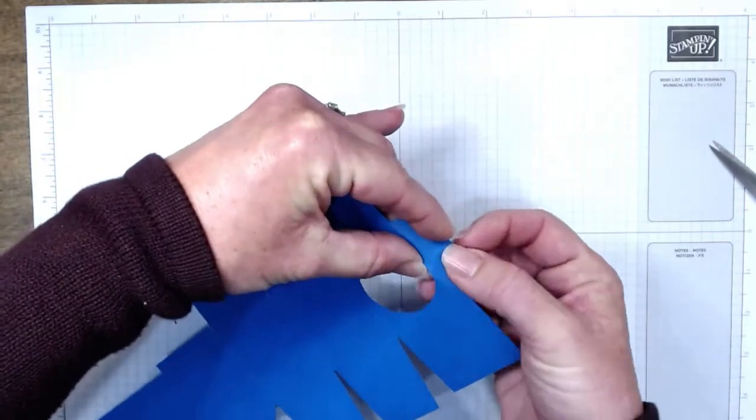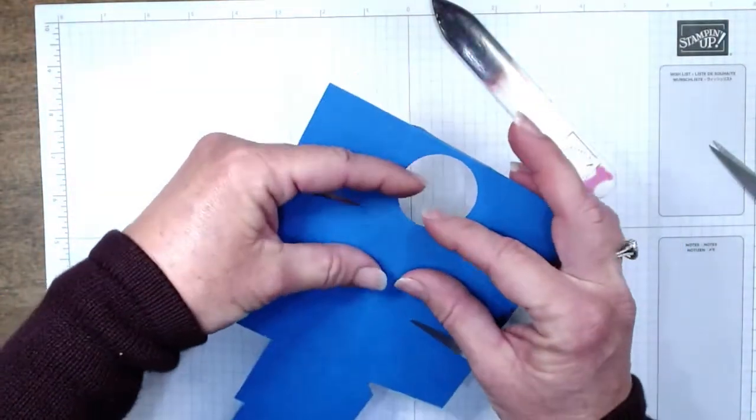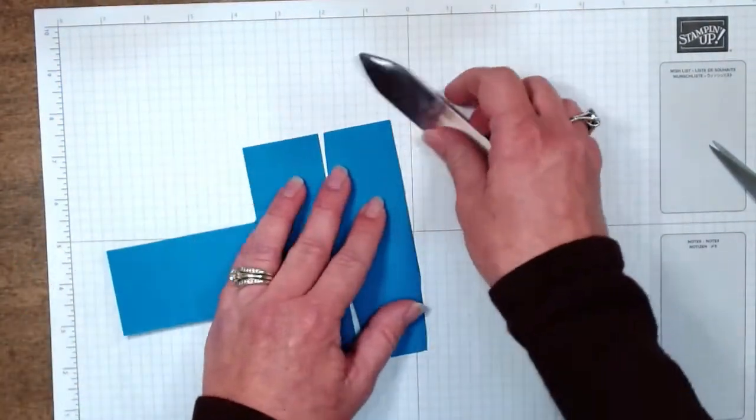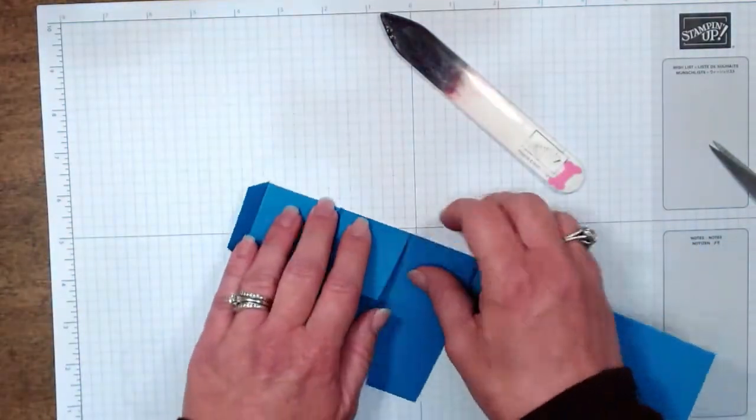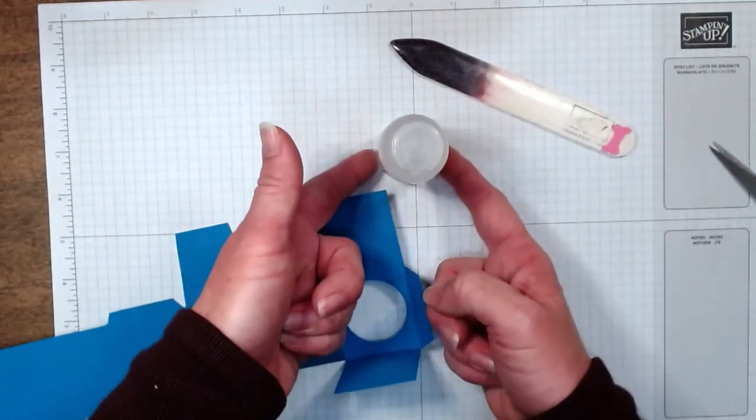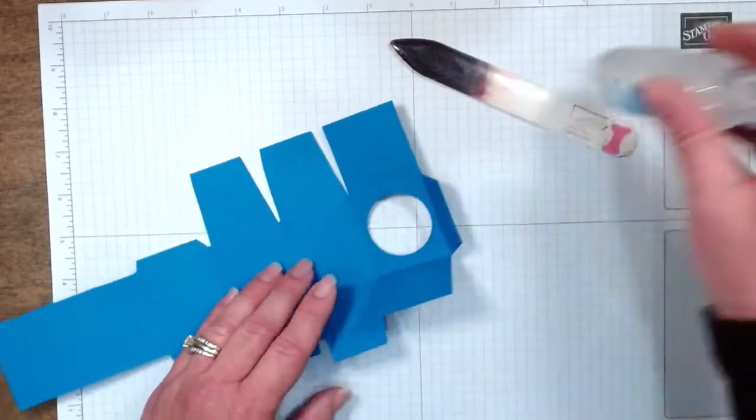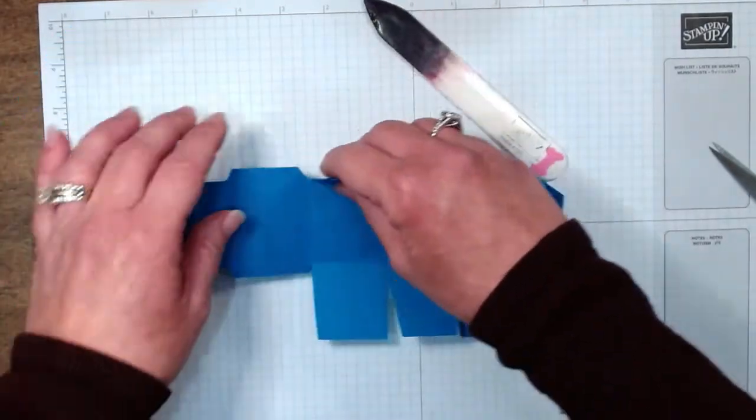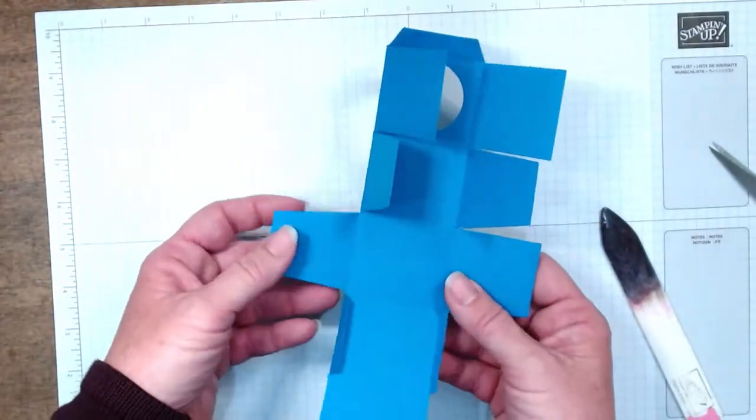So there we go. Easy peasy, right? Hopefully. So now I'm just going to go ahead and come in and fold on our score marks. Yes Valerie, if you want to do this, you will have to watch it a couple times. I honestly have no idea where my box math comes from. I literally took this bottle, set it on the scoreboard, realized that it was one and a half inches around, so I needed one and three-fourths inch flaps, and I created it.